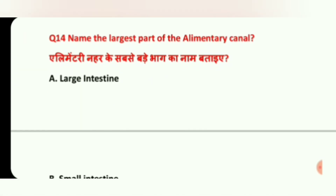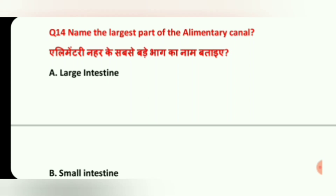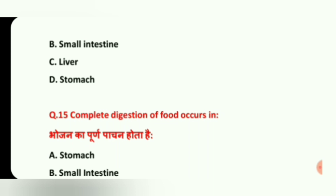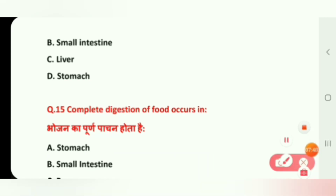Next question: Name the largest part of the alimentary canal. Options are: A, Large Intestine; B, Small Intestine; C, Liver; and D, Stomach. The correct answer is B, Small Intestine.